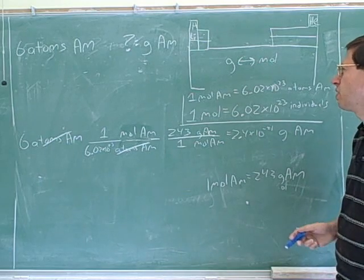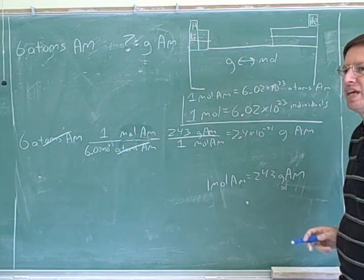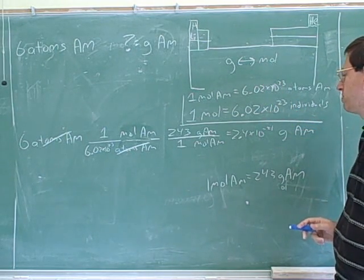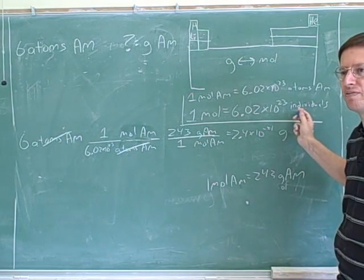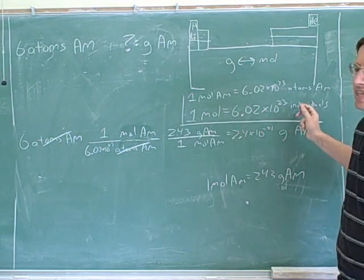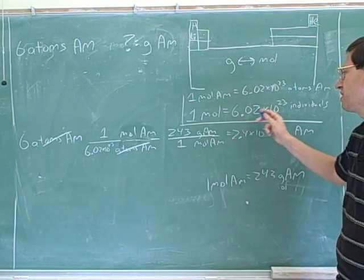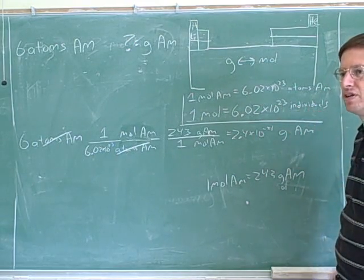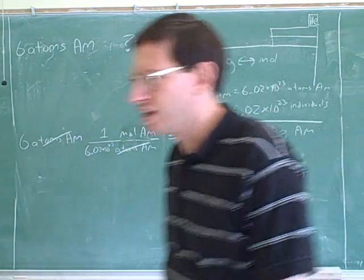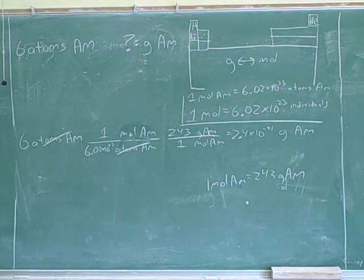If you want to figure out something about the individuals, then you need another conversion ratio that goes between moles and individuals. And here's that conversion ratio. This works for any type of particle. One mole of anything is 6 times 10 to the 23rd of those individual particles. This is another important thing.